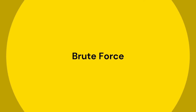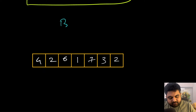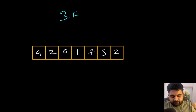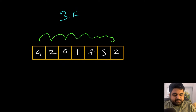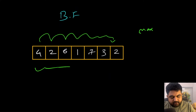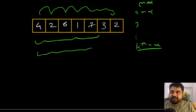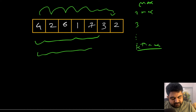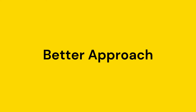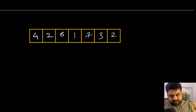The first approach that comes to mind is a brute force approach. The idea is straightforward: we iterate over the array to find the maximum value, then iterate again to find the second maximum, then iterate a third time for the third maximum, and so on until we reach the kth maximum element. This involves a lot of repeated work and the time complexity is O(n * k), which is not a good approach.